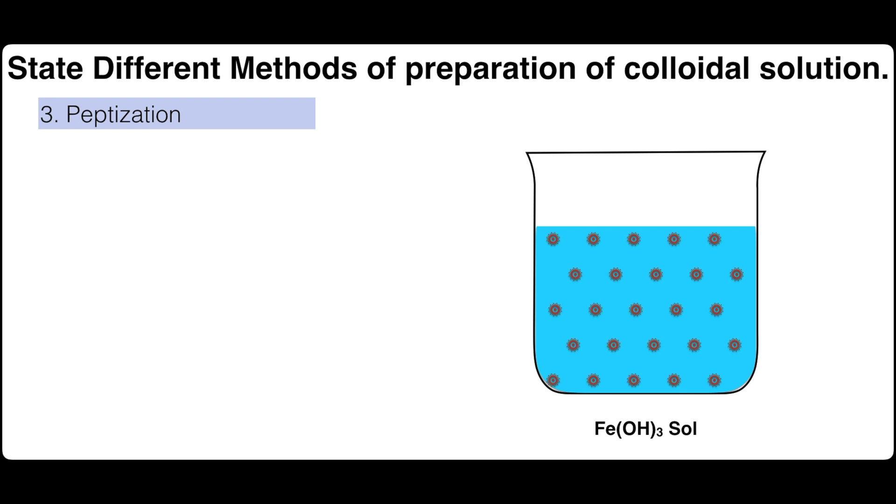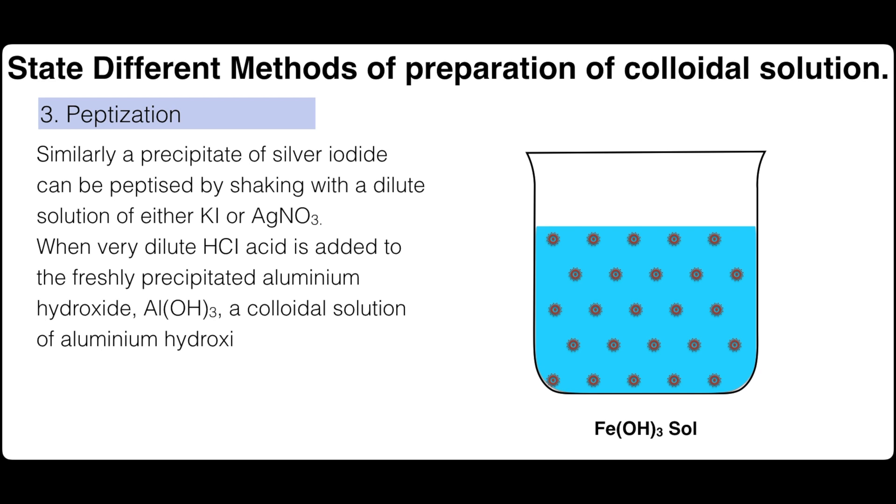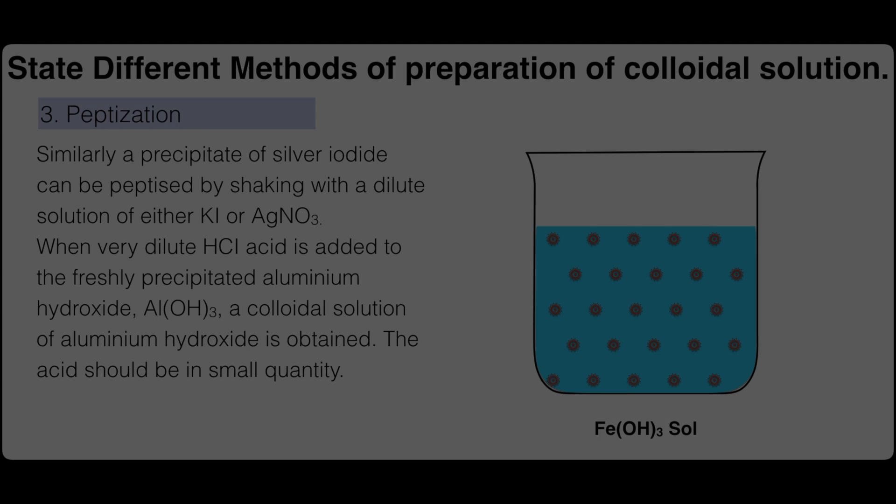The excess of ferric chloride, if any, can be removed by dialysis. Similarly, a precipitate of silver iodide can be peptized by shaking with a dilute solution of either KI or silver nitrate. When very dilute hydrochloric acid is added to the freshly precipitated aluminum hydroxide, a colloidal solution of aluminum hydroxide is obtained. The acid should be in small quantity.